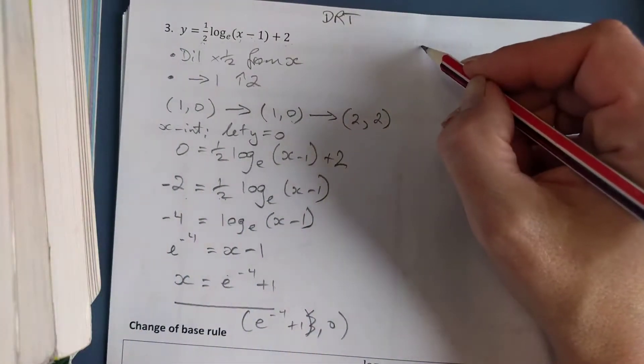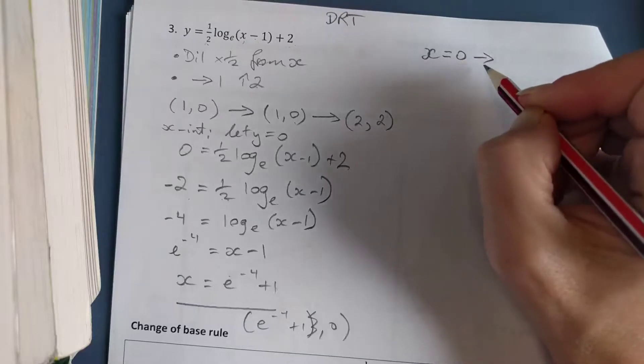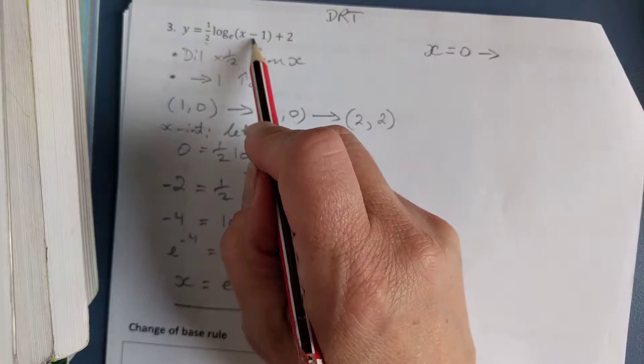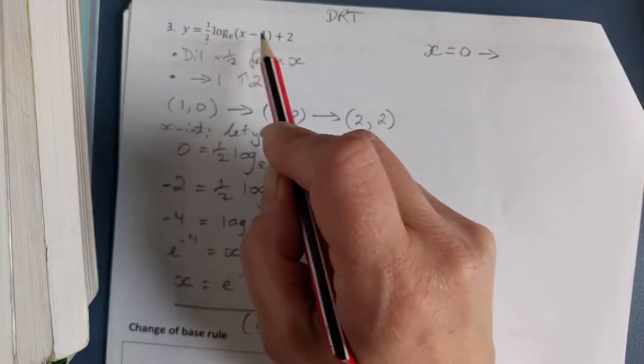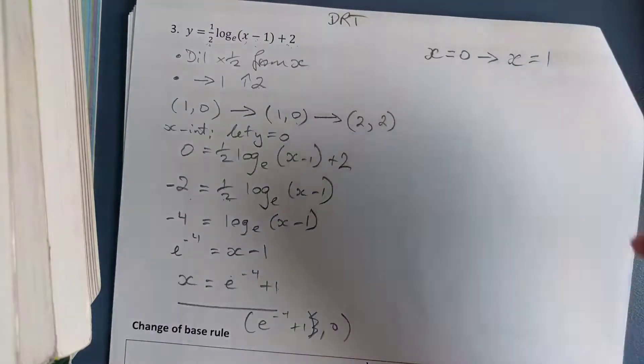So now I'm just going to sketch it. Oh, and my asymptote, sorry. So my asymptote is starting at x equals 0, and the dilation is not going to affect the asymptote. But when I move it to the right one and up 2, the up 2 won't affect it, but moving to the right one is going to change my asymptote to x equals 1.